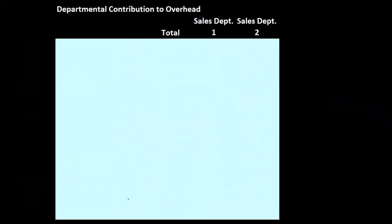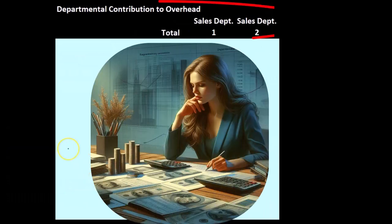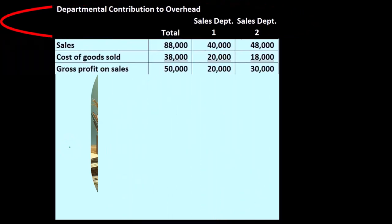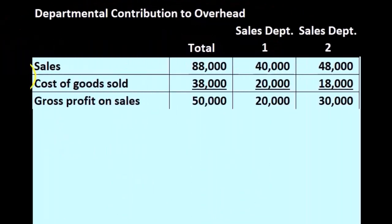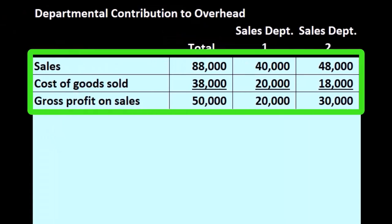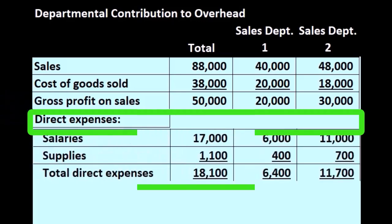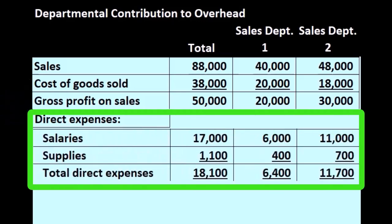Now we can change this format a little bit and look at the departmental contribution to overhead type statement. It's an income statement type of statement — a performance statement — but it's going to be broken out a little bit differently. We start off the same: sales, cost of goods sold, gross profit on sales. Then we take a look at those direct expenses applied directly to the department, which in our case include the salaries and supplies.